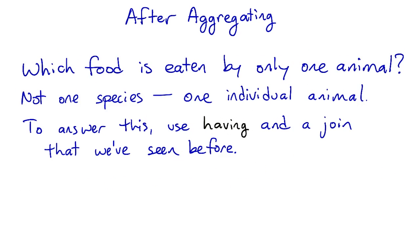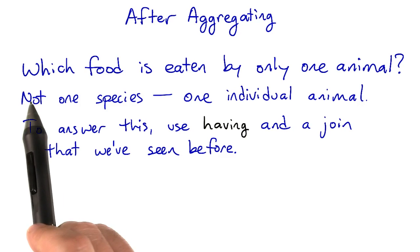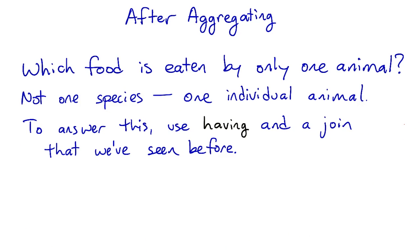So now for a different sort of question and a quiz. Which food is eaten by only one animal? Not just by one species, but only one individual animal in the whole zoo. To answer this, you'll have to use both the HAVING clause and a JOIN that we've seen before.